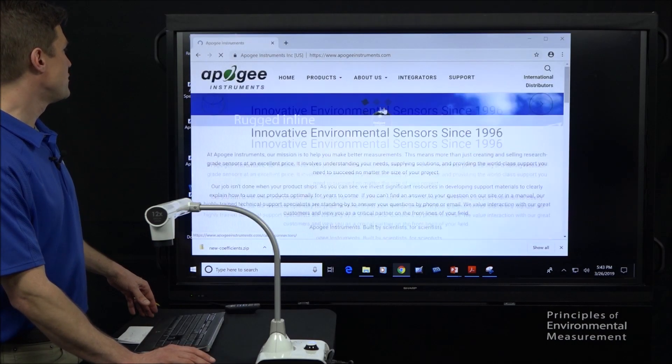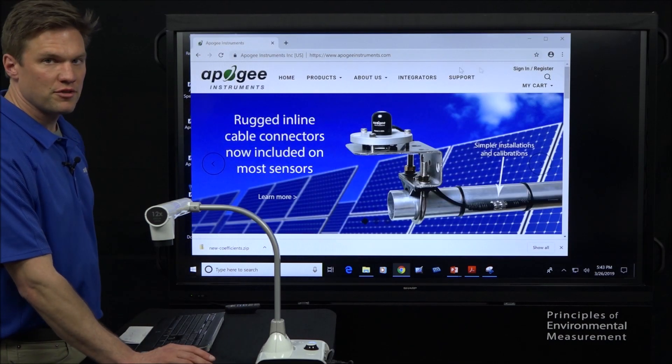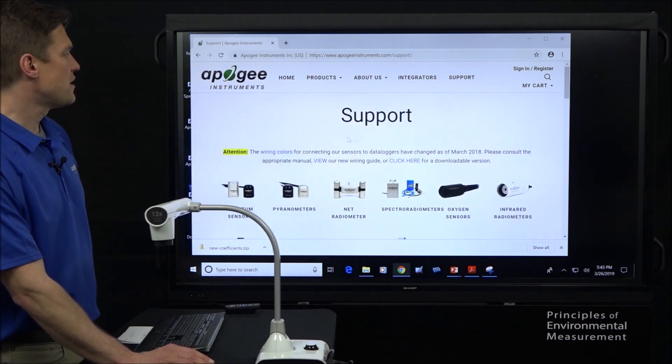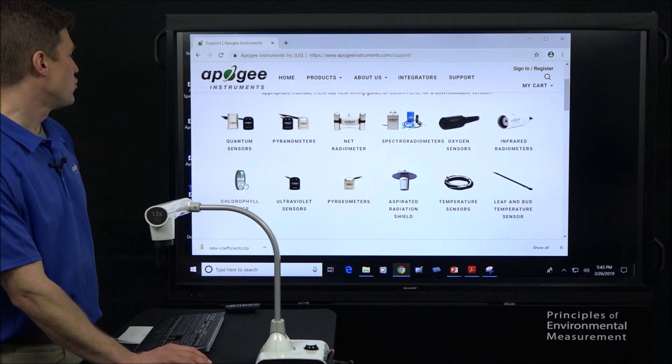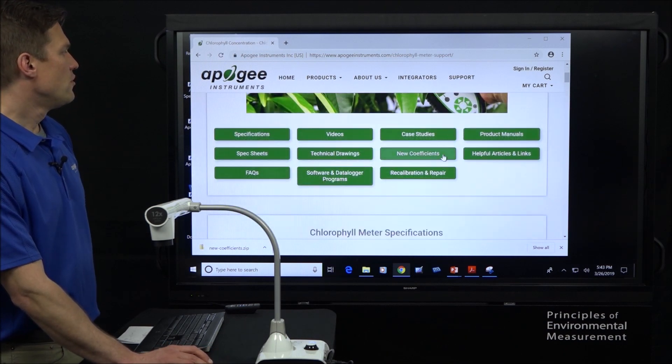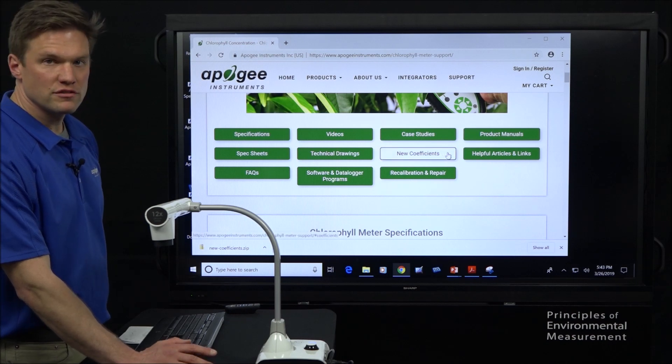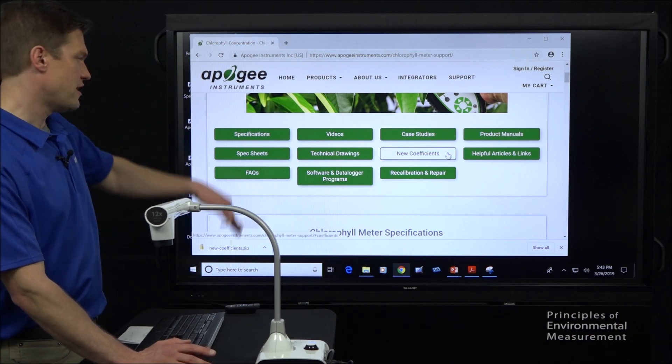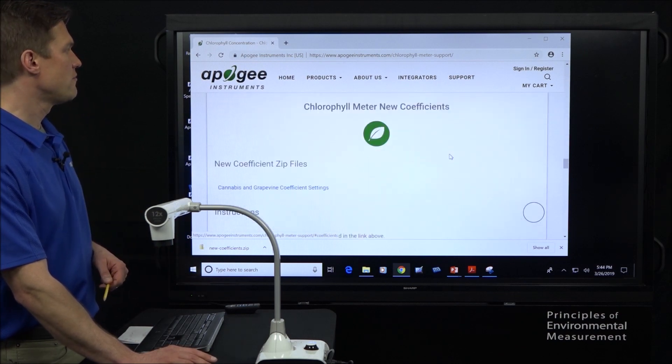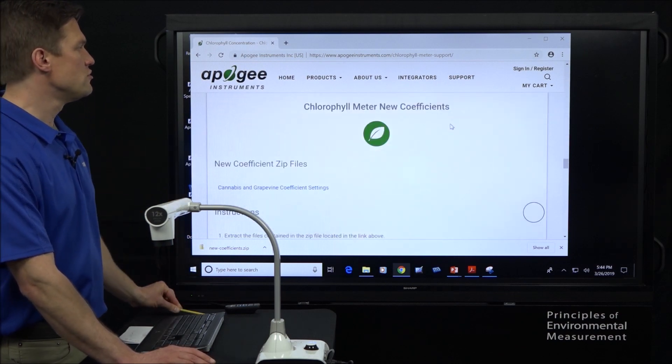You can go to our website, www.apogeeinstruments.com, click on the support tab up at the top and find the chlorophyll meter page. Now, we're on chlorophyll meter support. Right here, new coefficients, you can click on this link and this will take you down the page to the relevant spot or you can just scroll down and get to it that way. But here's the chlorophyll meter, new coefficients.